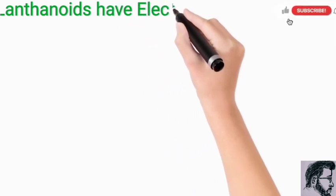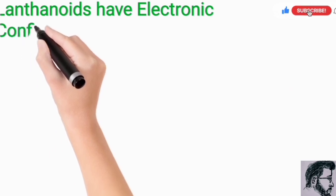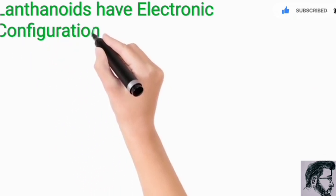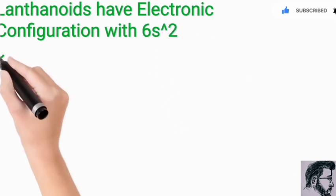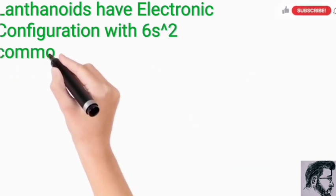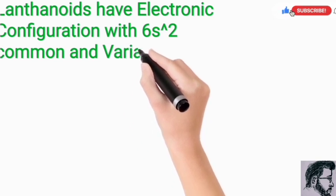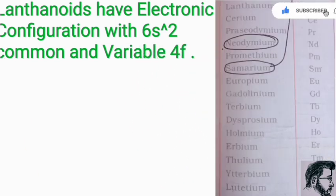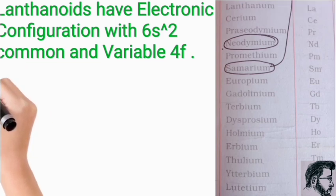Regarding electronic configuration, the lanthanoid members have 6s² as a common outermost electronic configuration for every member, and 4f^n is the variable configuration. That variable n is the fact which makes these elements fall in the F-block.